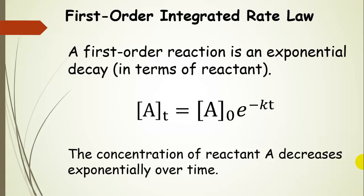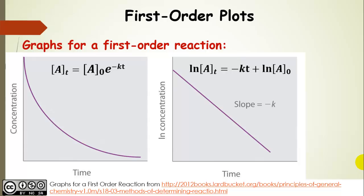A first order reaction is an exponential decay in terms of the reactant concentration. Here are the two graphs that correspond to a first order process: the exponential form, and the linear version. The linear version is highly useful because we can collect concentration data, take the natural log of it, and plot it versus time T. If we get a straight line, then we have a first order process. The slope of this line is equal to the negative of the rate constant, negative K.